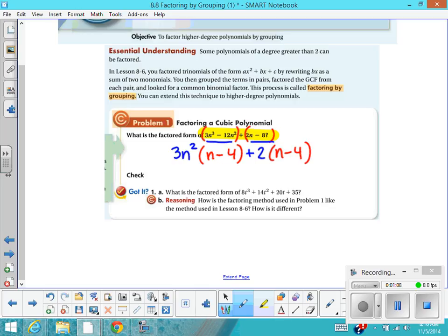After this point, it's just about collecting like terms. So you want to collect and say, how many n - 4s do I have? I have 3n² + 2 of them.